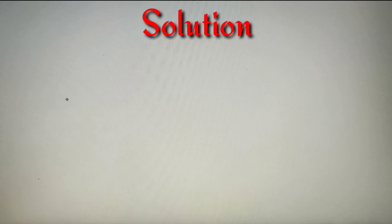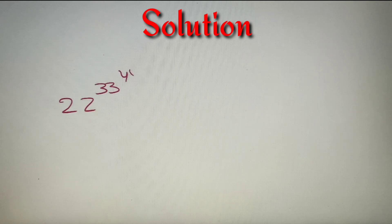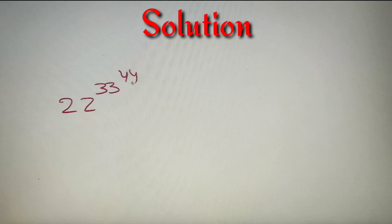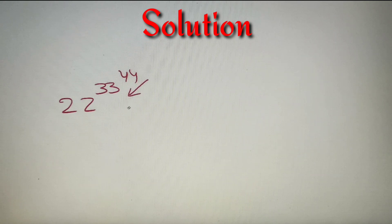According to the given question, we have to find the unit digit of 22 raised to the power 33 whole raised to the power 44. Now, when we are provided a number raised to a power and then raised to a different power, we solve from top to bottom and then find the unit digit.